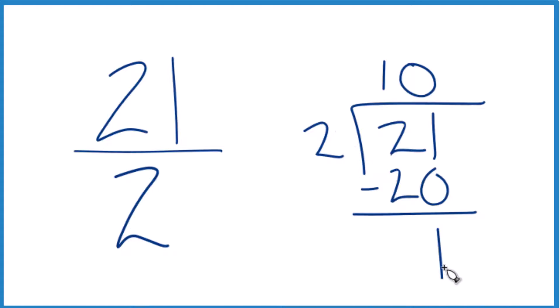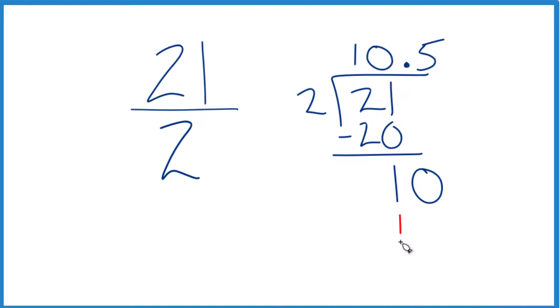So 2 doesn't go into 1. But if I put a decimal point up here, I could call this 10. Now 5 times 2, that's 10. Subtract, no remainder.